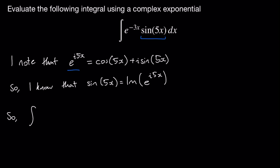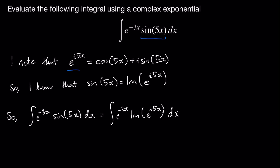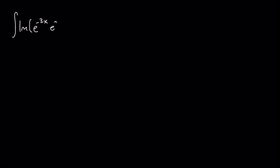So my integral can be rewritten in the following way. That's my integral equal to e to the minus 3x times the imaginary component of e to the i5x. And since e to the negative 3x is a real number, I can actually bring it inside that imaginary component. So e to the negative 3x times the imaginary component of e to the i5x is the same thing as the imaginary component of e to the negative 3x times e to the i5x.